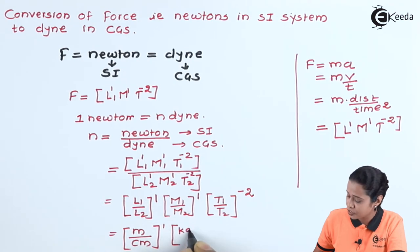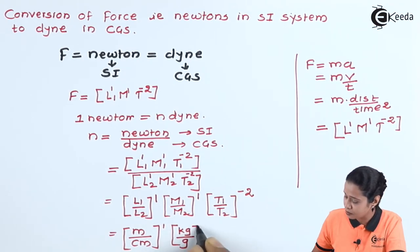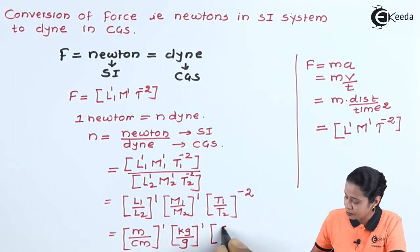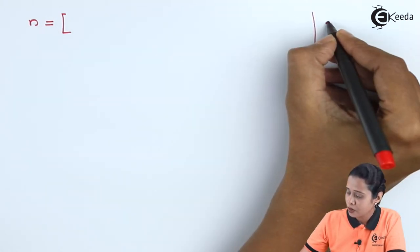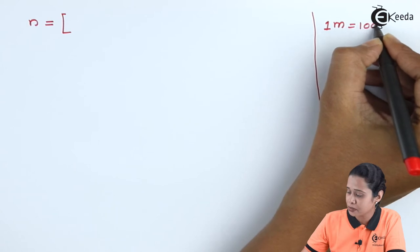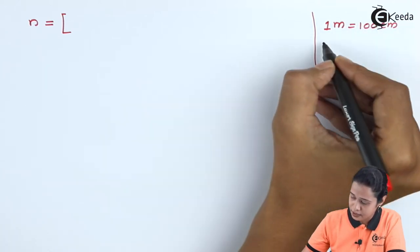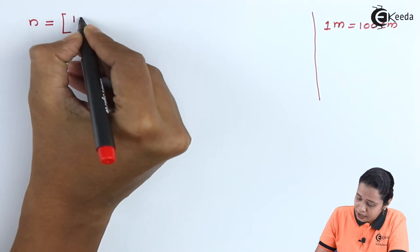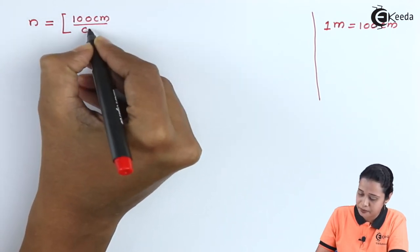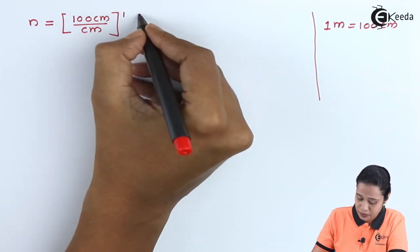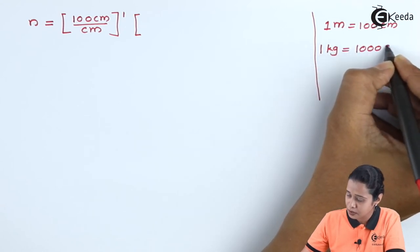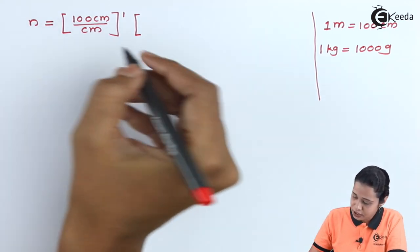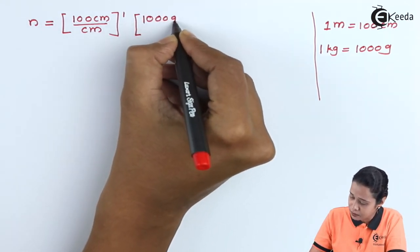Mass in MKS is kg and in CGS it is gram, power is 1. And time will be second in both the cases, 10 raise to minus 2. So here we will write down N is equal to meter. We know 1 meter is equal to 100 centimeters. Hence, here just write down 1 meter that is 100 centimeter upon centimeter and its power is 1. The second term is kg. We know 1 kg is equal to 1000 grams, so just write down here that is 1000 grams upon grams.